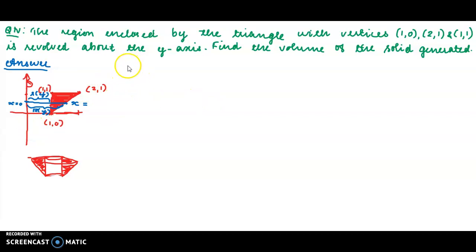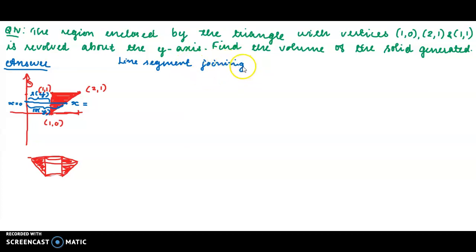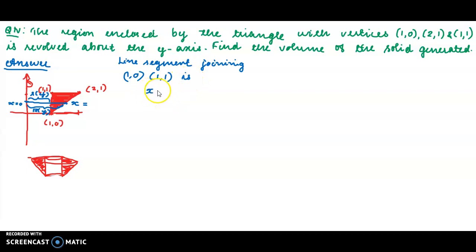We have a line segment joining (1,0) and (1,1). That is a straight vertical line along x equal to 1. The y-axis is x equal to 0, and this inner border is x equal to 1. The distance of 1 unit gives us the inner radius.